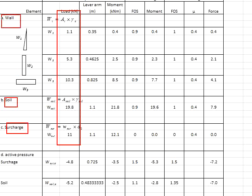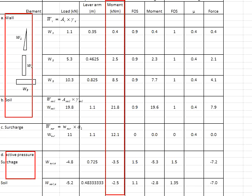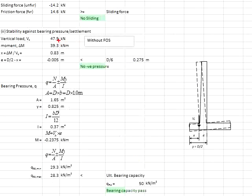The total moment is the summation of moments which includes the active pressure and weight of members. The total vertical load is obtained as 47.5 kN and the total moment is 39.3 kNm.